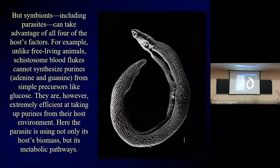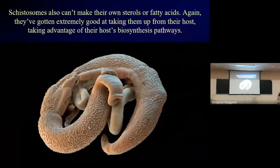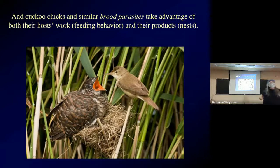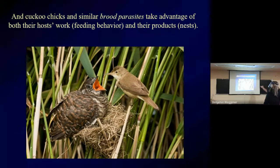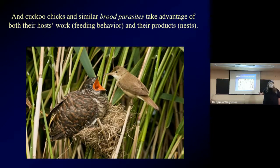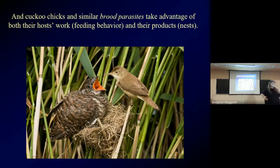Schistosomes can't make their own purines and can't make their own fatty acids, so they are parasites on your metabolism as well as on just your biomass. You'll also have parasites that parasitize not so much biomass or metabolism as work and products. Here's a cuckoo chick being fed by a host bird. Cuckoos lay their eggs in other birds' nests, the cuckoo chick crowds out the bird's actual offspring and gets the host parent to feed it. So the cuckoo is parasitizing the host's feeding behavior and the nest that the host builds.